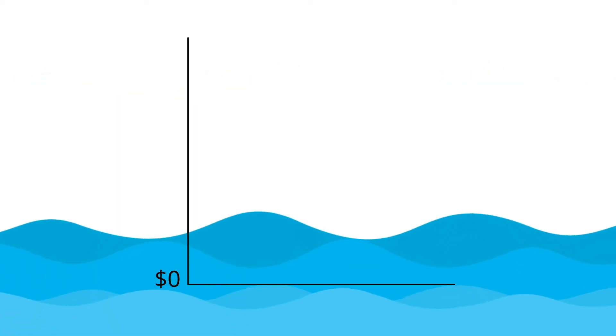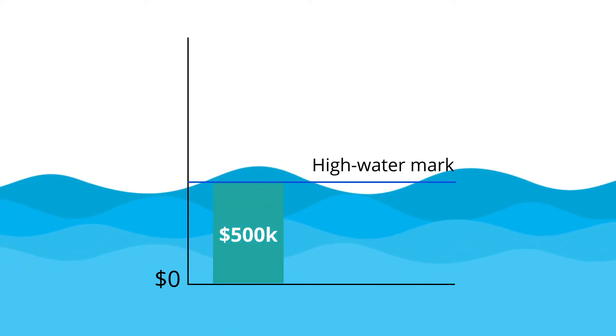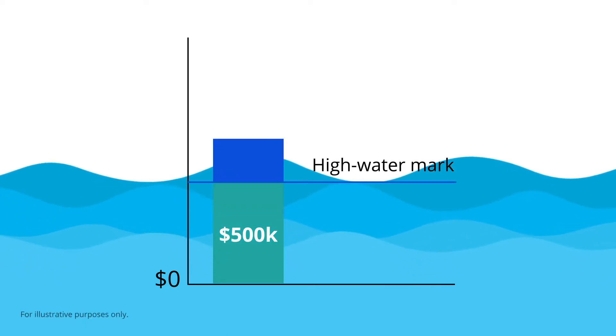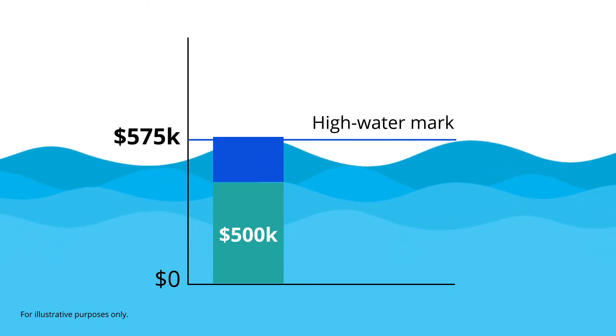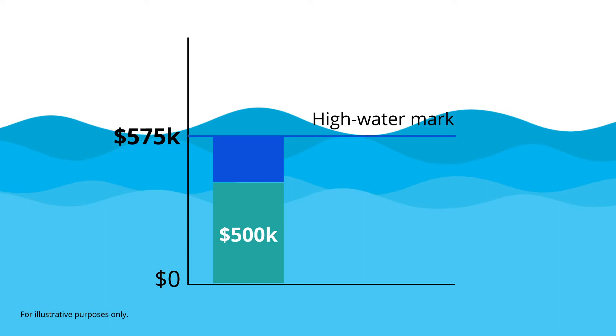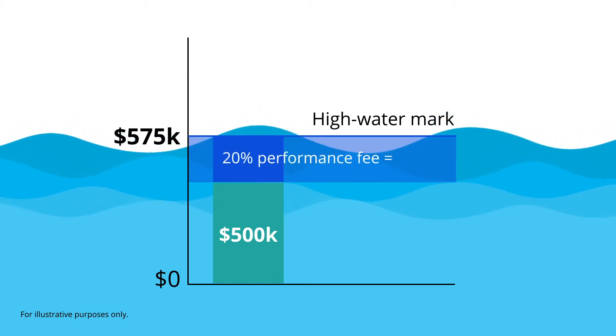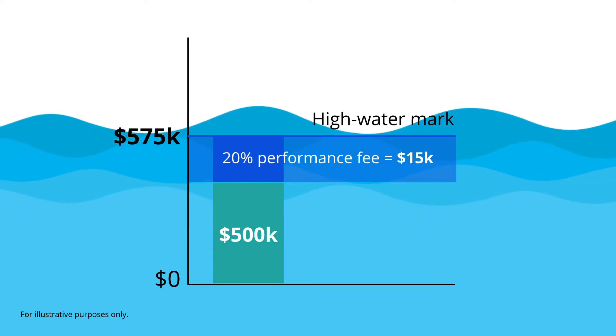Let's take a simple example. Assume the investor places $500,000 into a fund, and the fund earns a 15% return. The investment is worth $575,000, becoming the new high watermark. The investor owes a 20% performance fee on the $75,000 gains, which equates to $15,000.